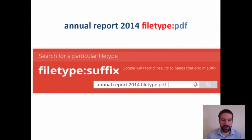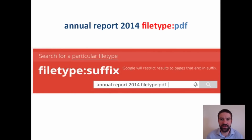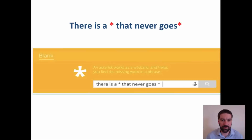One of the most useful things for a teacher, I always think, is the ability to search for a file type. For example, 'annual report 2014 filetype:pdf', or perhaps you're looking for 'rainforests filetype:ppt', which would generate a PowerPoint file.